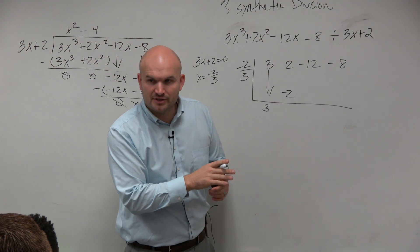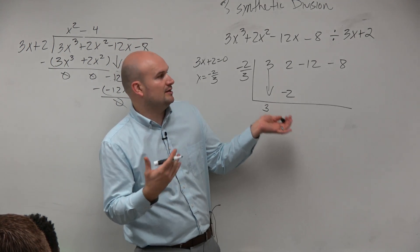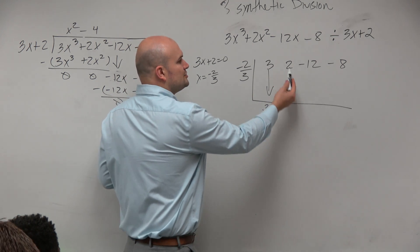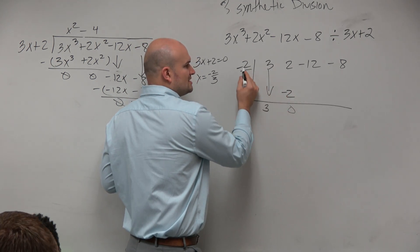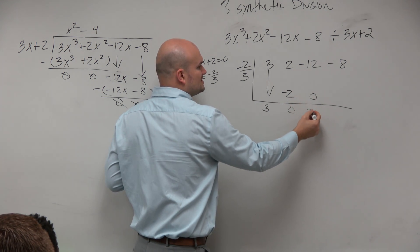But people all the time will be looking at somebody across their group and not be paying attention, and then they'll be completely confused on a problem like this. 2 plus negative 2 is 0, 0 times anything is just going to be 0. Negative 12 plus 0 is negative 12.